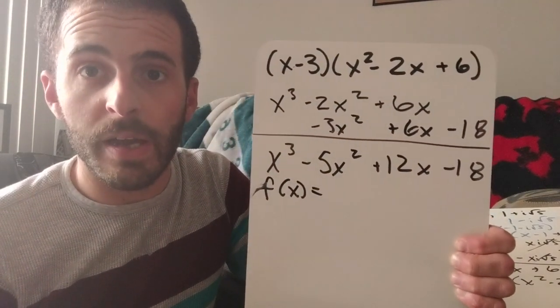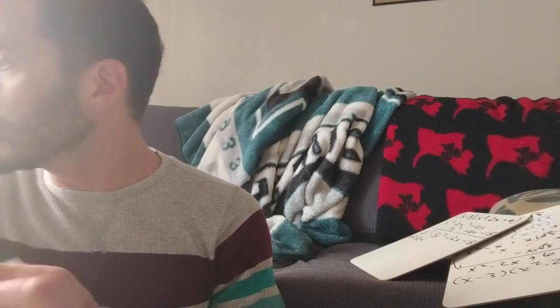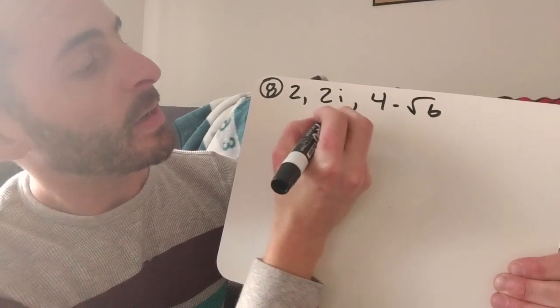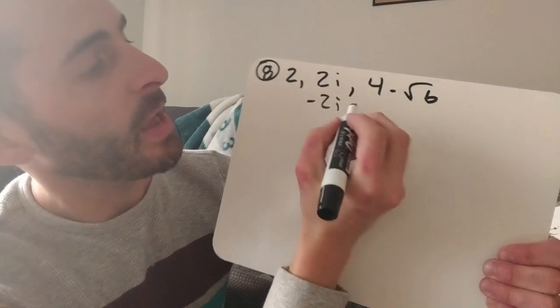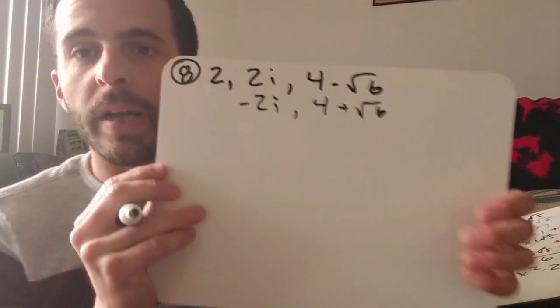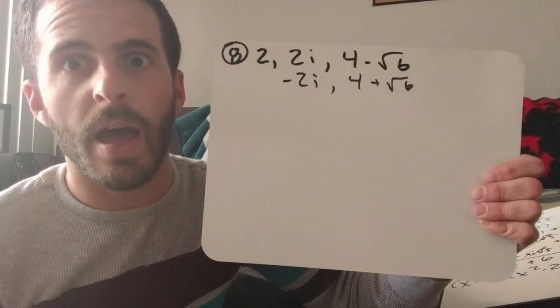Moving on to number 8 — it's going to be a big one, so make sure you have enough notebook paper. For number 8, they tell us that the roots are 2, 2i, and 4 minus √6. 2 doesn't need a conjugate, but 2i needs a conjugate — change the sign in front of the i — so that's negative 2i. And 4 minus √6 also has a conjugate root: 4 plus √6. So I have five roots, five solutions, which means I'm going to have x to the fifth at the end.